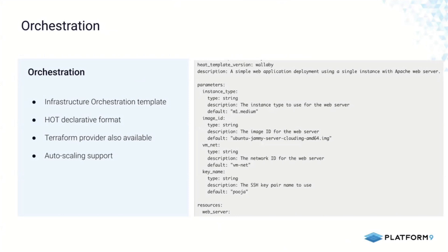Let's say you have a complex application that requires a VM to be created with a specific volume, a network, a security group, and you want to package that as one deployment. That is where infrastructure as code comes in, and you want to automate that using our infrastructure orchestration template.